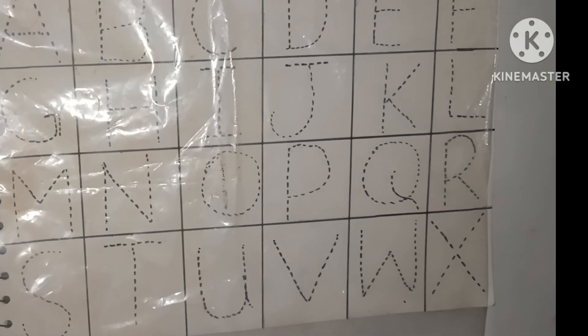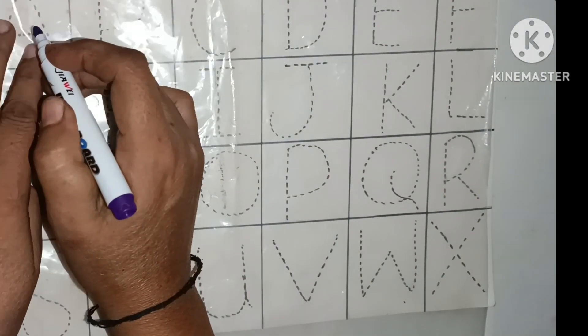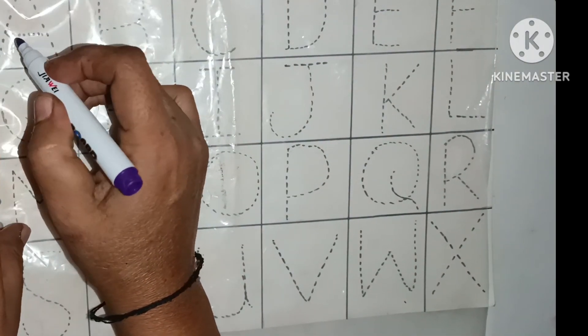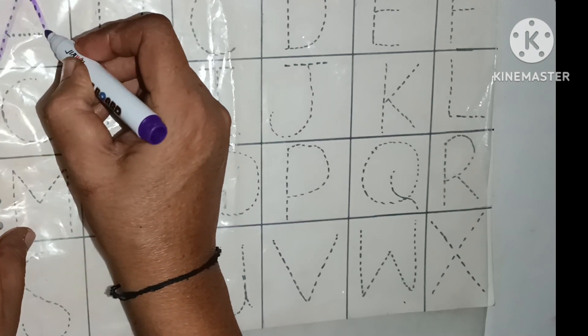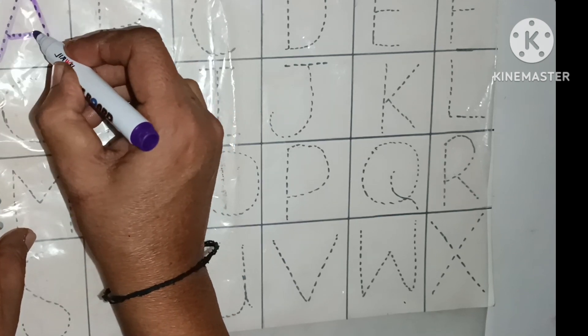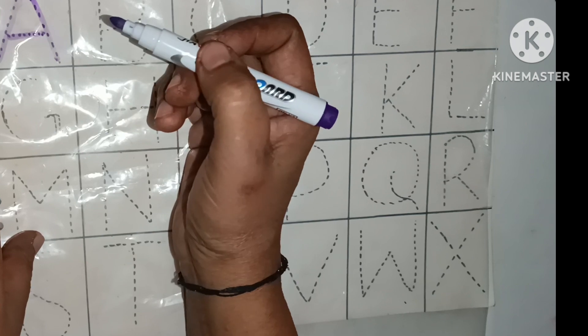Now, we start the ABC. Now, here is the A. A for apple. Purple color. Purple color.